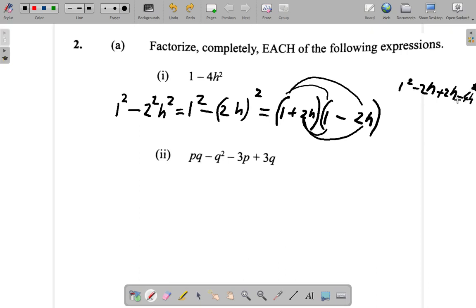So negative 2h plus 2h is 0. So this is gone. So what you have here is 1 squared minus 4h squared. So it does work here.